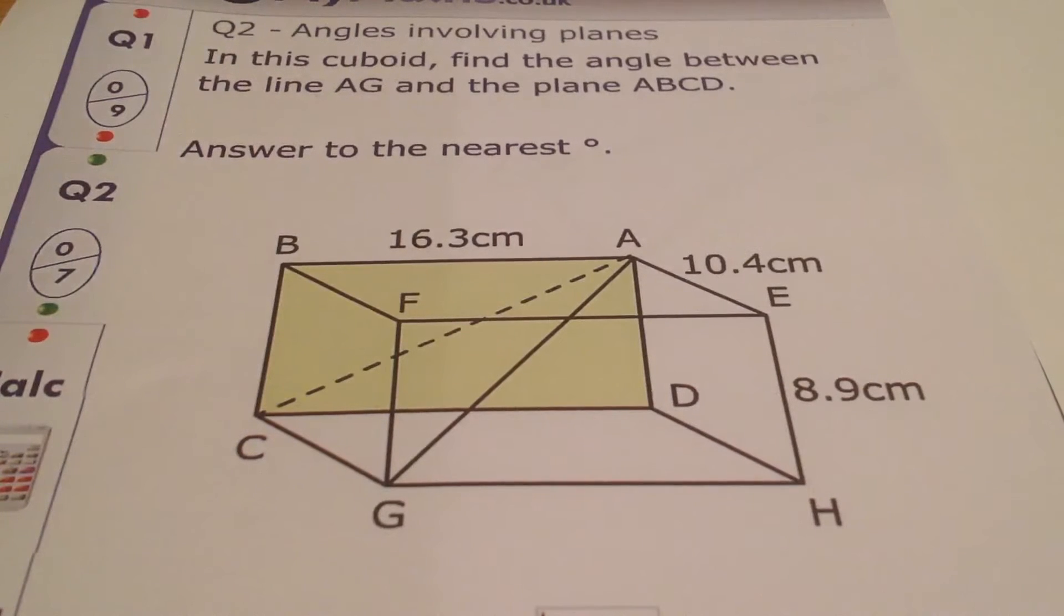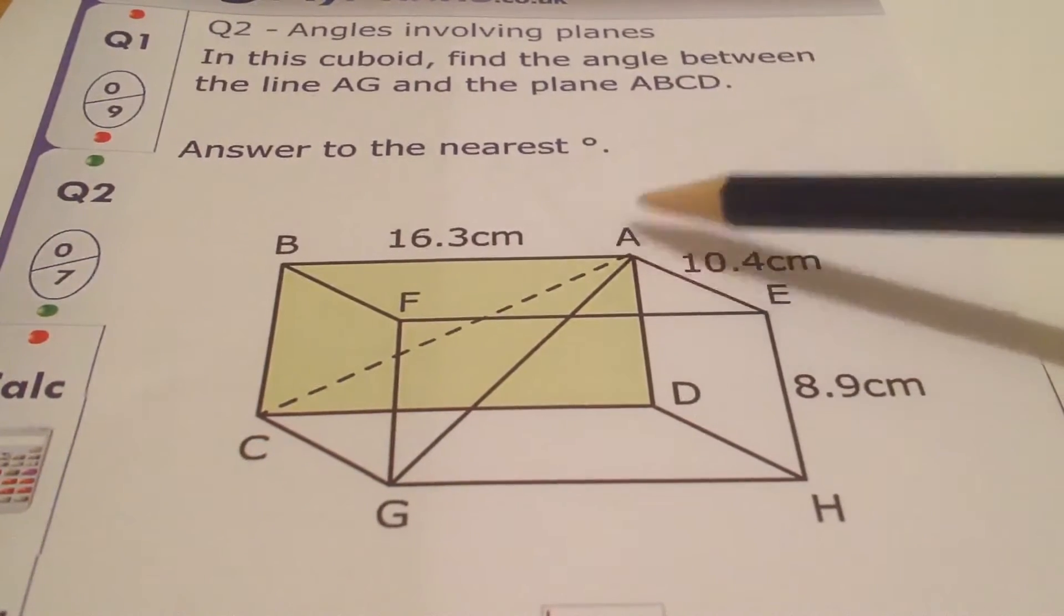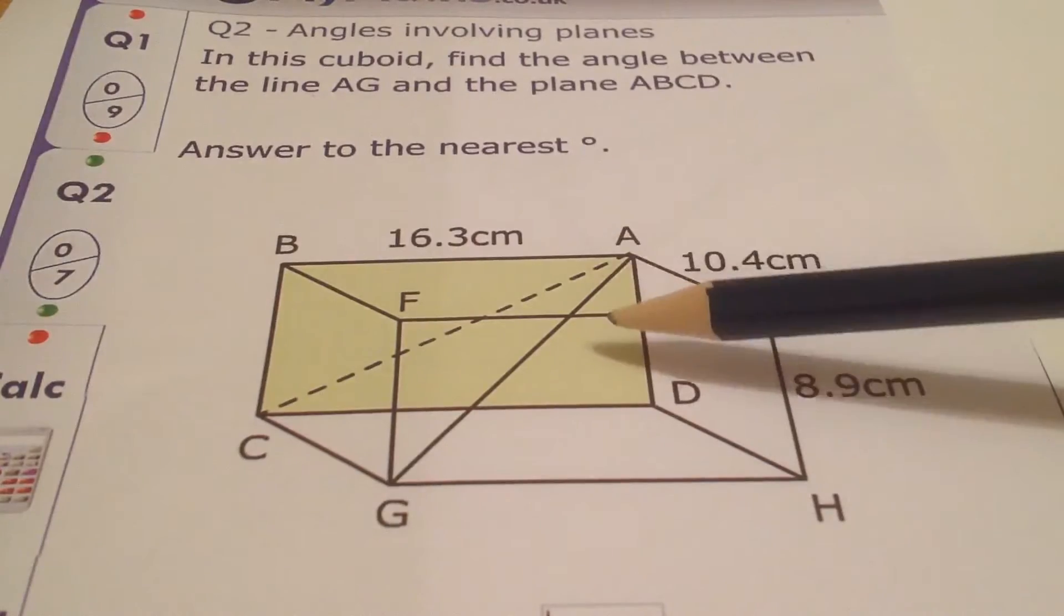The second question requires a little bit more thought because we're looking at angles involving planes. Now, a plane is just a face, so we're looking at the angle between the line AG and the plane, or the face, at the back of my cuboid.